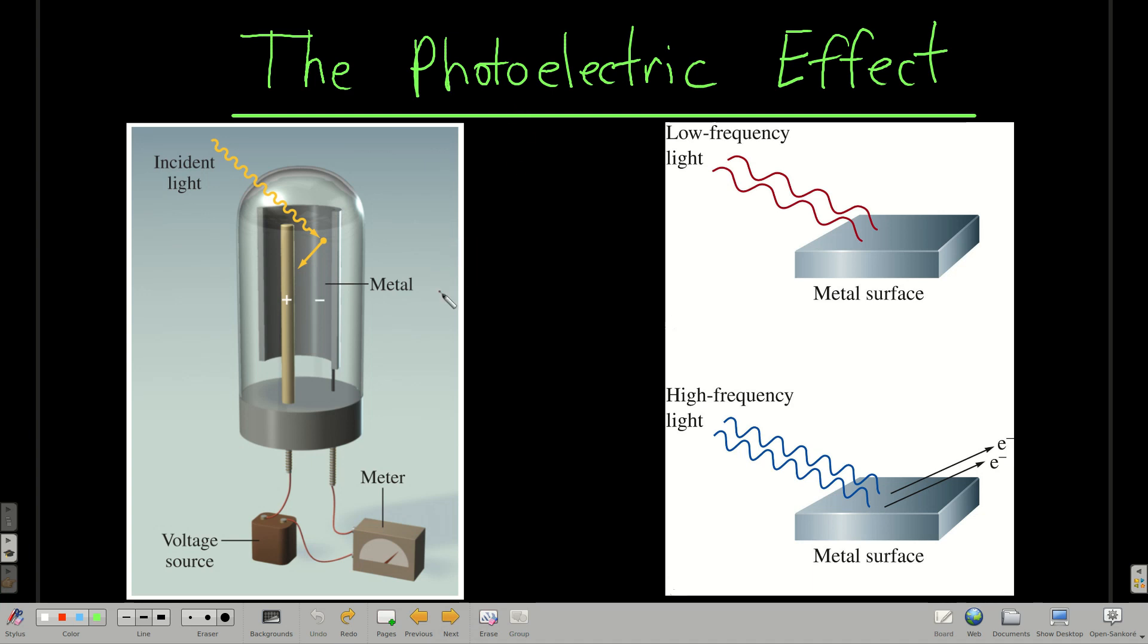So here's the photoelectric effect. The idea is if you take a piece of metal in a vacuum, like this tube here, and put another electrode in that vacuum and connect a voltage source, a power supply to it, along with a meter that can measure the flow of current.